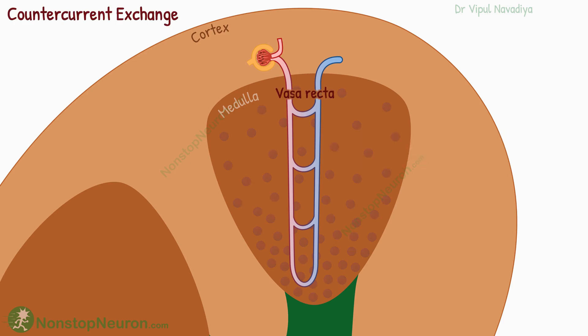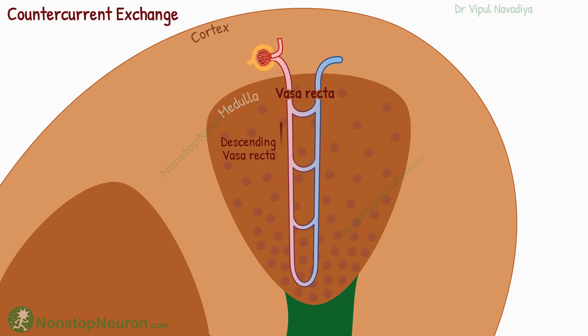The capillaries in the medulla are called vasa recta. They form hairpin-like loops. The descending vasa recta enters from the cortex and goes deep into the medulla, then makes a hairpin turn and goes back to the cortex as ascending vasa recta.